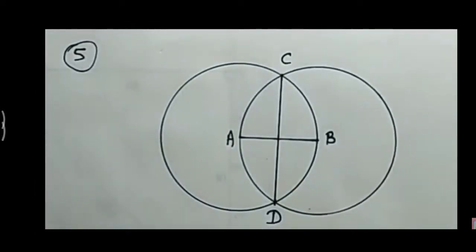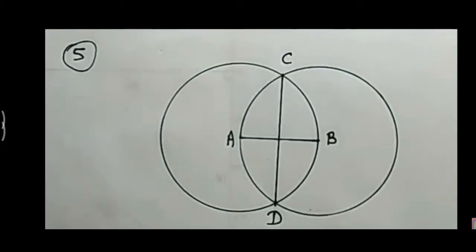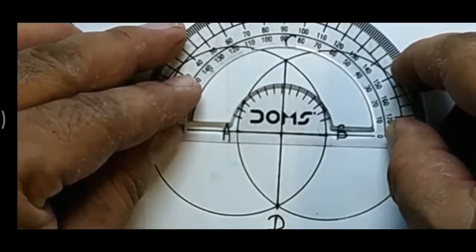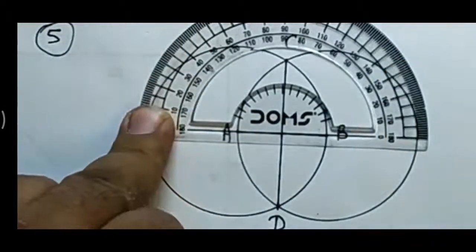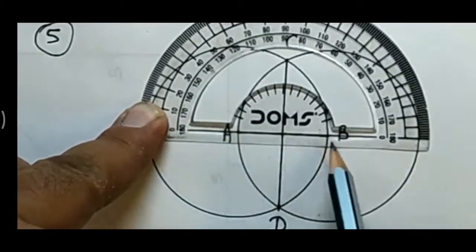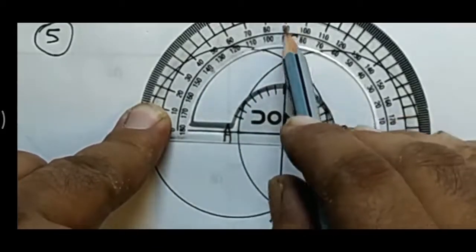The other intersection point is D. Check whether AB and CD are at right angles or not. We can check this only by protractor — we will measure the angles. Let's measure AB and CD. Here you can see I am measuring: it is exactly 90 degrees. So AB and CD are at right angles — the angle is 90 degrees.